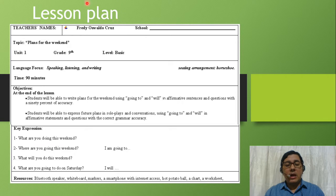First of all, I'll be showing you the main parts of the lesson plan. We have the teacher's name and the name of the school or institution. The topic is plans for the weekend. We can see the unit, the grade—in this case ninth grade—and the level: basic. In language focus, I included speaking, listening, and writing. The time to develop this lesson plan is 90 minutes. I took into account the horseshoe seating arrangement in order to make the class more interactive.